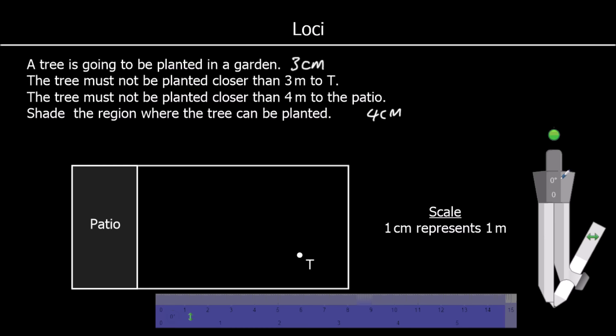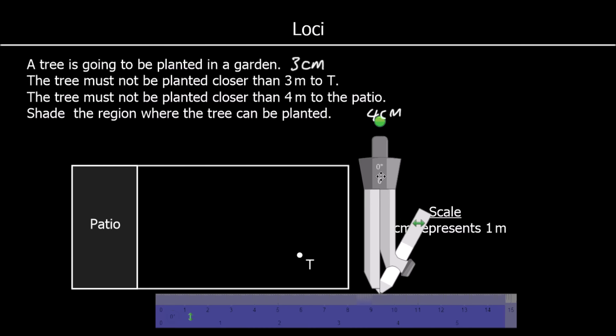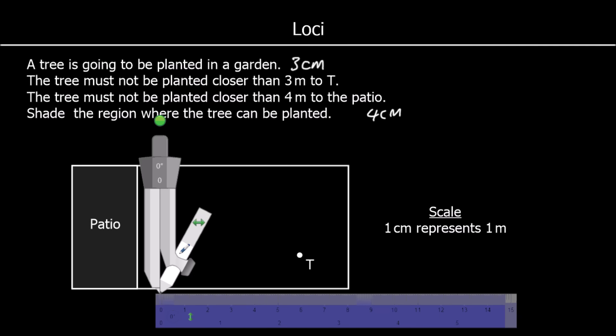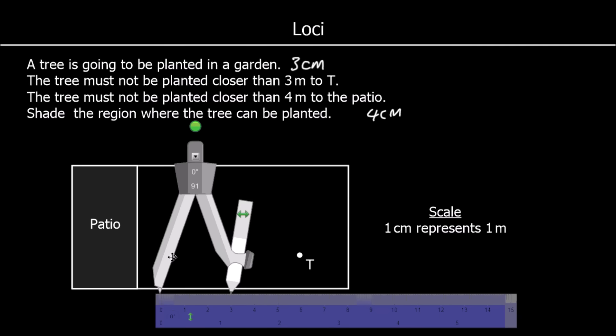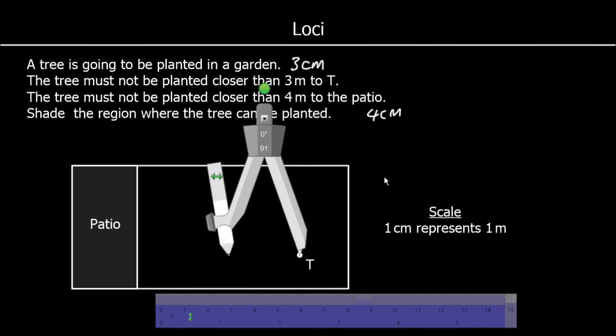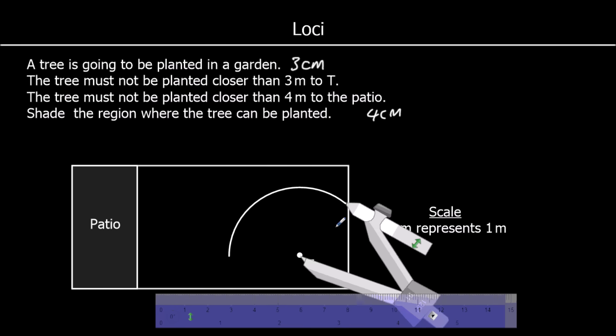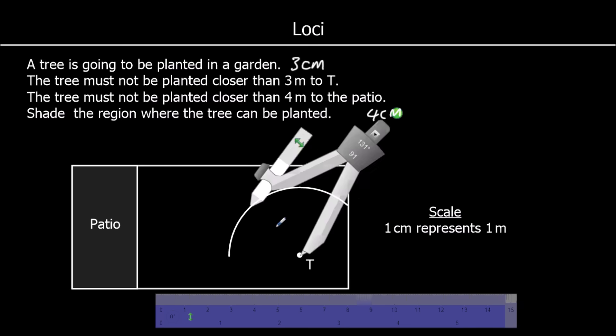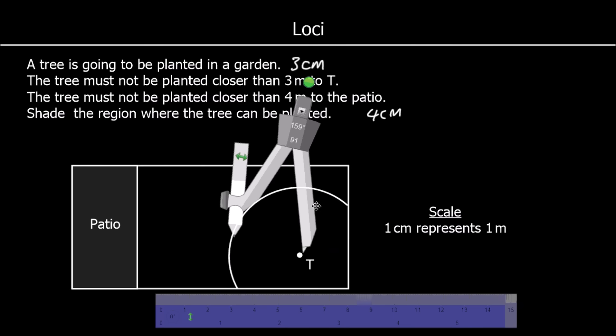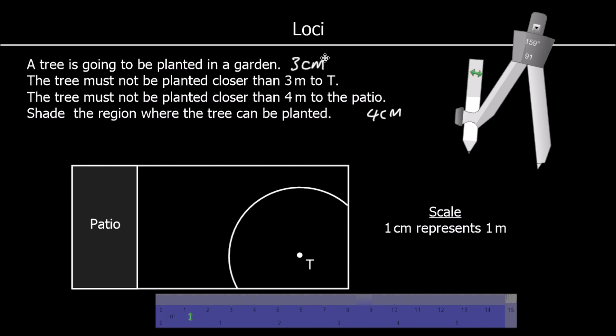So we can draw a circle, all the points 3 centimeters away from T. So let's draw all of the points 3 centimeters away from T. It has to be in the garden, so there's no point going outside of the garden. So there are all the points 3 centimeters away from T. So it can't be in this area.